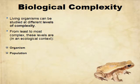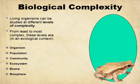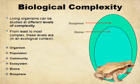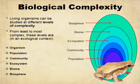Talking about biological complexity, the organism is the smallest unit we study, and then it goes all the way up to the biosphere. Your population is made up of different organisms, your community is made up of populations, your ecosystem is made up of communities, and so on, all the way down to the individual organism.